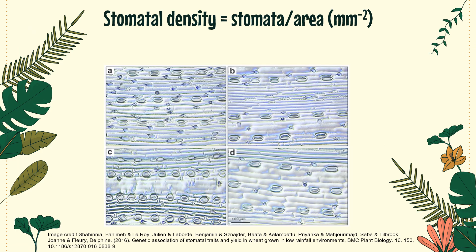The number of stomata a plant has can be an adaptation to its environment, just like cuticle thickness or leaf shape. We can calculate stomatal density — how many stomata per square millimeter of a leaf's surface. There are a couple of ways to count stomata: we can peel the epidermis off a leaf, put it on a microscope, and count; or we can make castings by painting the leaf's surface with clear nail polish, letting it dry, peeling it off, and analyzing that casting which has all the surface impressions of the leaf.